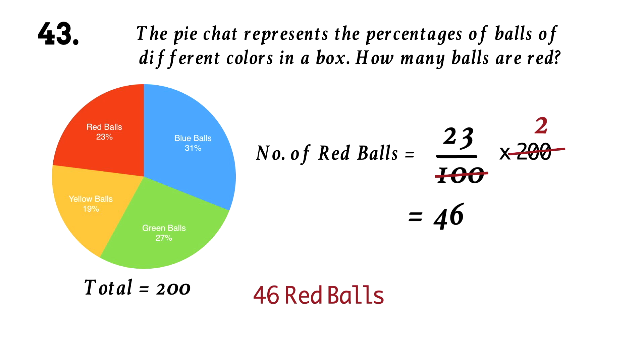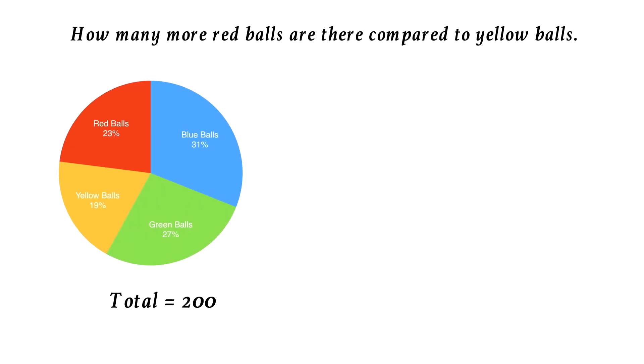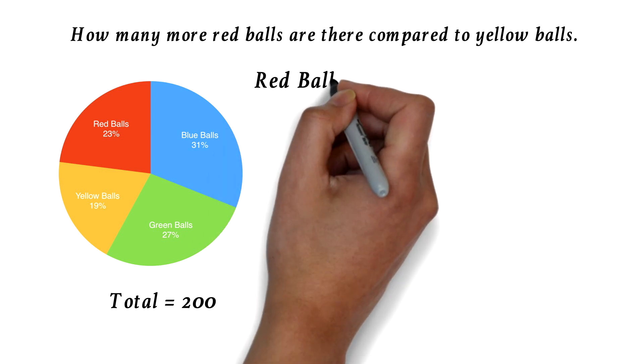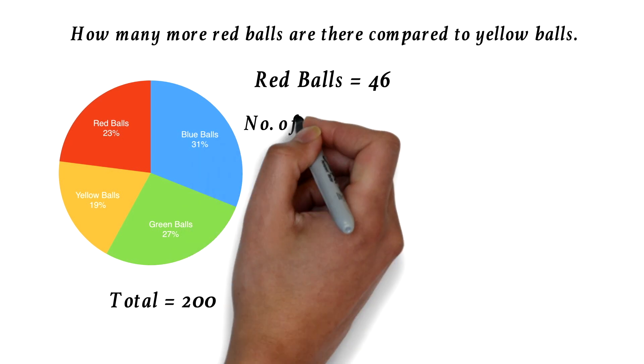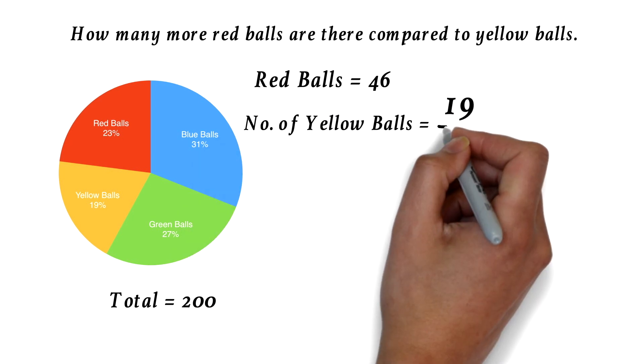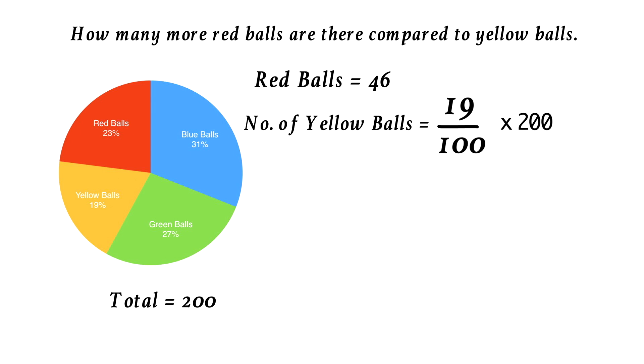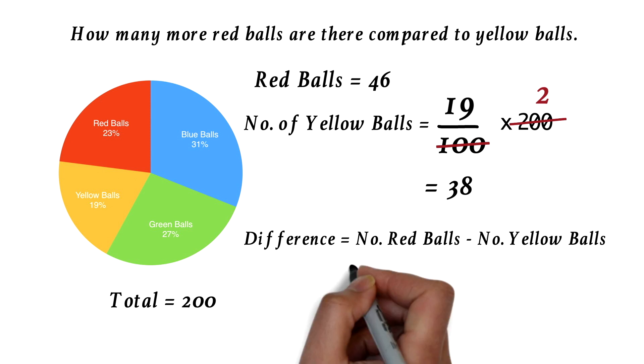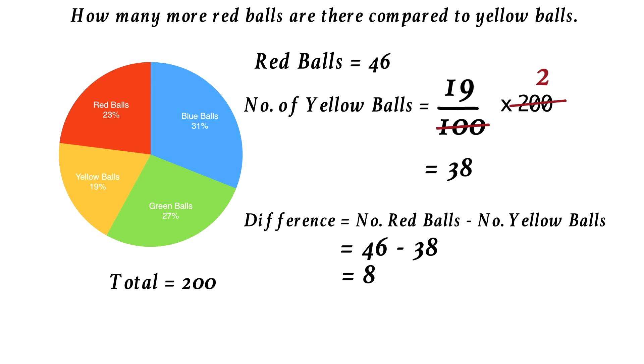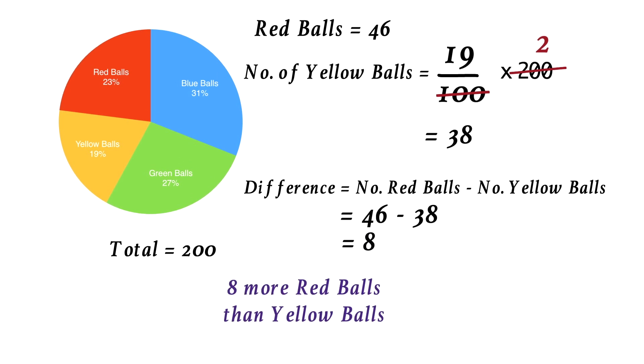The work here is being able to convert the percentages to the number of balls. Once you can do that, you should be able to solve all twists. How many more red balls are there compared to yellow balls? We have already found the number of red balls, which is 46. We can find the number of yellow balls. That's 19 over 100 times 200. We do the math and get 38 yellow balls. The question is asking for the difference. So we will have the number of red balls minus number of yellow balls. 46 minus 38, which is 8. So there are 8 more red balls than yellow balls.